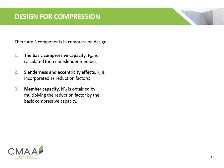There are three components when it comes to compression design. The basic compressive capacity, F0, is calculated for a non-slender member. The slenderness and eccentricity effects, K, are incorporated as reduction factors. The member capacity, KF0, is obtained by multiplying the reduction factor by the basic compressive capacity.